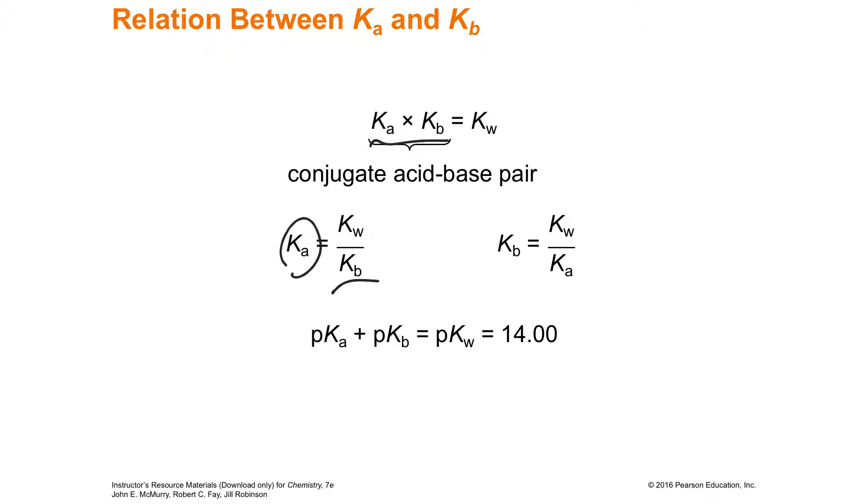Now, if you're ever given the wacky piece of pK sub A, remember P is just the negative log of something. As long as it's the negative log of everything, instead of the negative 14, it's just going to be 14.